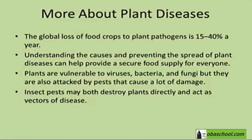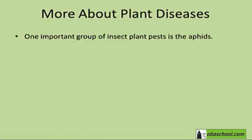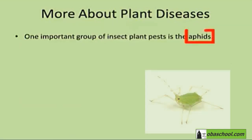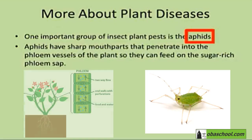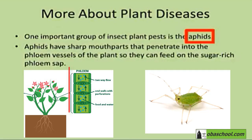Insect pests may both destroy plants directly and act as vectors of disease. One important group of insect plant pests is the aphids. Aphids have sharp mouth parts that can penetrate into the phloem vessels of the plant so they can feed on the sugar-rich phloem sap.